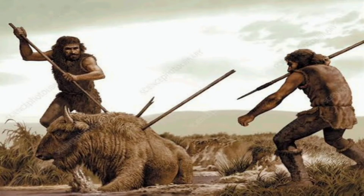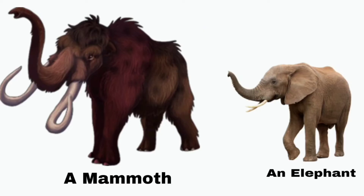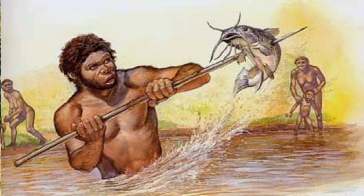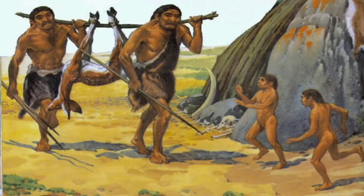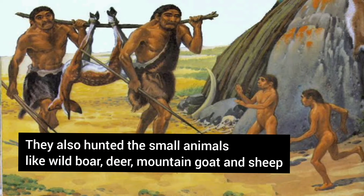For example, the mammoth — the mammoth was an ancestor of the elephant, however it was much bigger in size compared to the elephant. In this age, Homo sapiens started fishing. They also hunted small animals like wild boar, deer, mountain goat, and sheep.